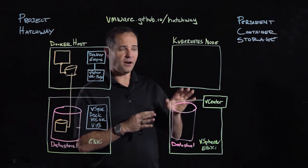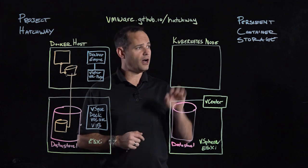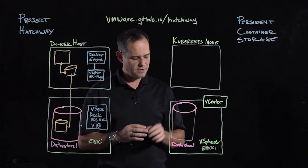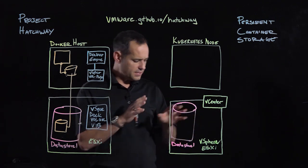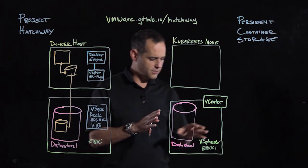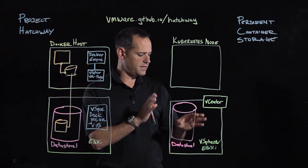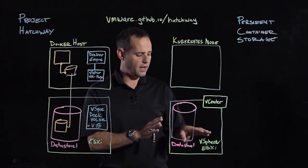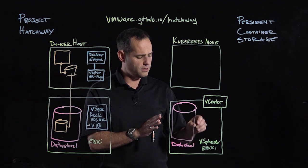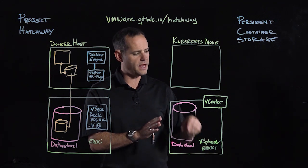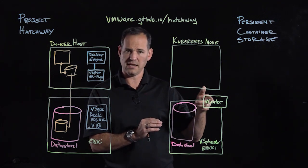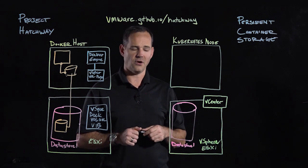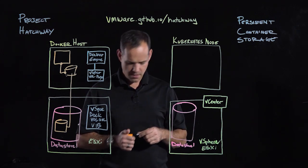The second environment is when we have a Kubernetes environment. It's a little bit different — the big thing you'll notice here is that it isn't just ESX, it's actually vSphere. The difference is that we're going to be interacting with vCenter to provision some of these persistent volumes.